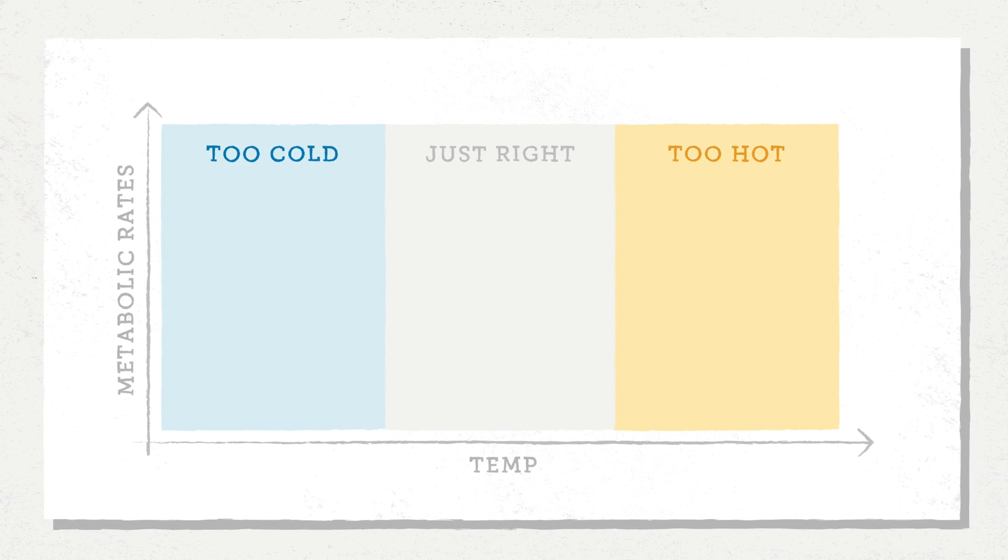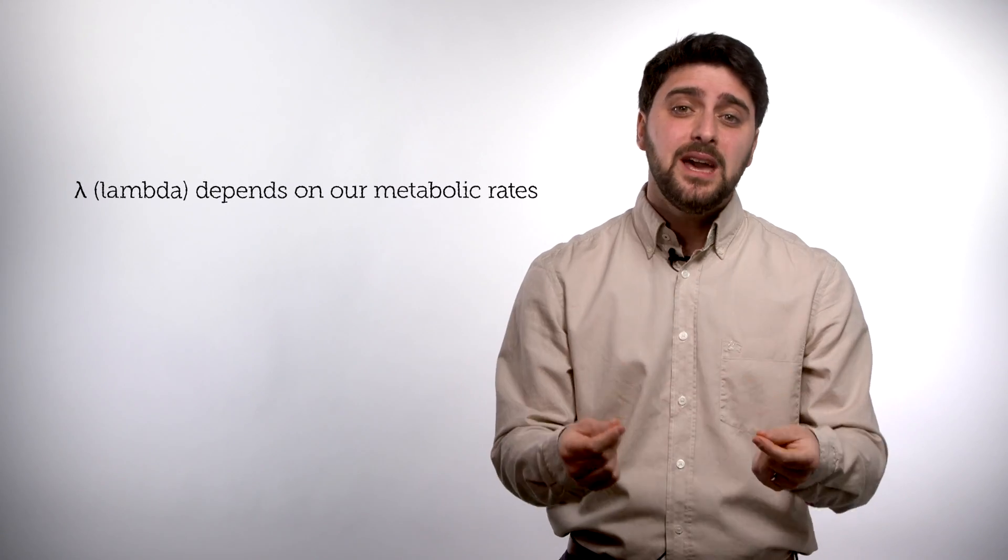And the same thing happens with organisms. If temperatures are too cold, we can't live. Temperatures are just too warm, we also can't live. We need a range of temperatures that's just right. And just right means different things for different organisms. Now coming back to lambda, lambda itself depends on our metabolic rates. And typically, especially for cold-blooded organisms, so organisms that actually cannot produce their own heat, lambda increases at first and then decreases. So the range at which populations can grow needs the temperature to be just right.